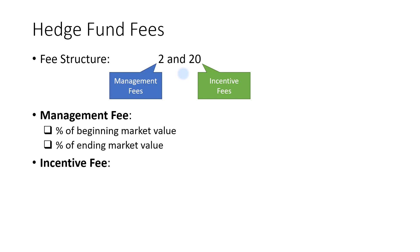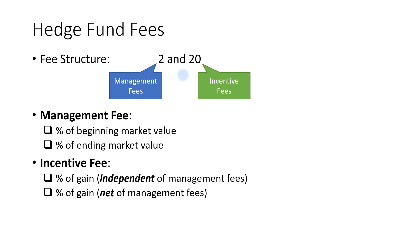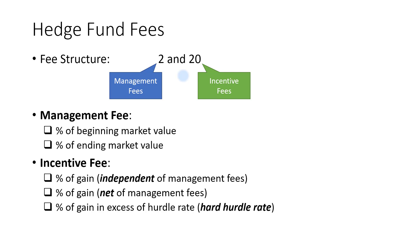For incentive fees, it can be computed as a percentage of gains calculated independently of management fees, or it can be computed net of management fees, or it can be computed as a percentage of gain in excess of the hurdle rate. In this case, we call this a hard hurdle rate.